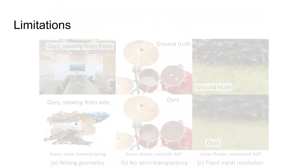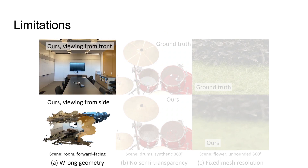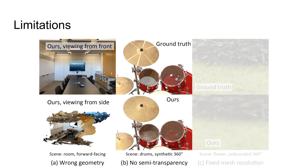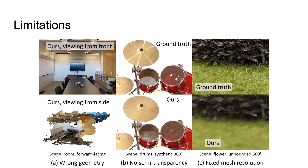There are some limitations of our method. First, similar to other NeRF methods, our method may not produce the correct geometry. Second, it uses binary opacities, so it cannot handle scenes with semi-transparent parts. Third, it uses fixed mesh and texture resolutions, which may be too coarse for close-up views.